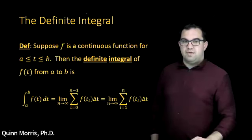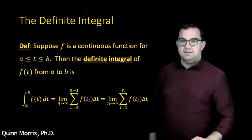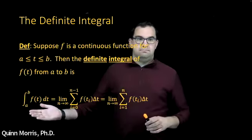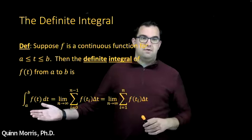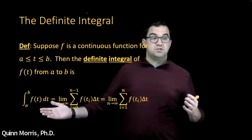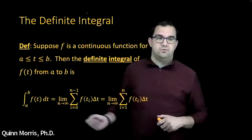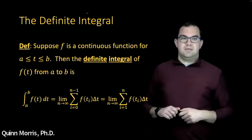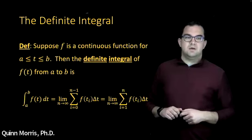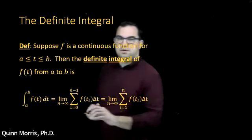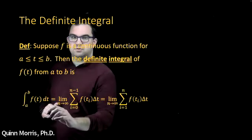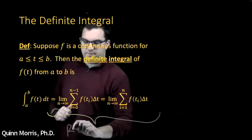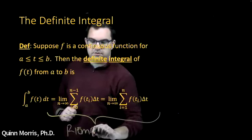Then we can define the definite integral of that function from a to b. The first piece you see here is just the integral from a to b of f of t dt — that's notation that denotes the definite integral. And then you see these next two equations, which are the limits of these sums, called Riemann sums.